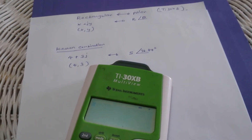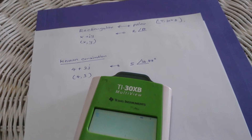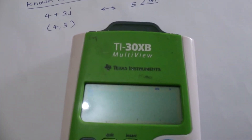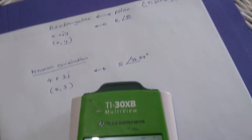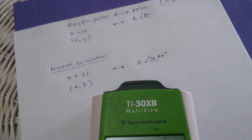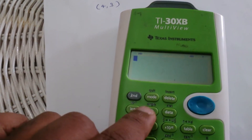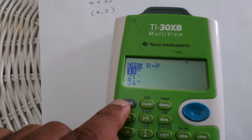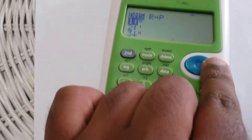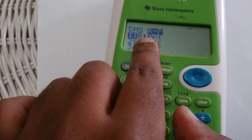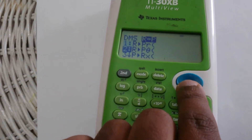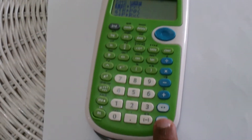We're converting from rectangular form 4 plus 3j to polar form R-theta. First, make sure the calculator is in degree format. Then press Second, go to PRB, and select R to P, which is the rectangular-to-polar function. Select RPR and press Enter.